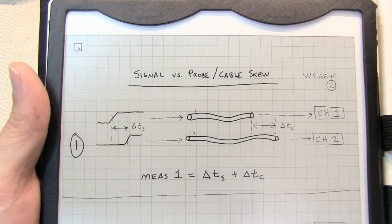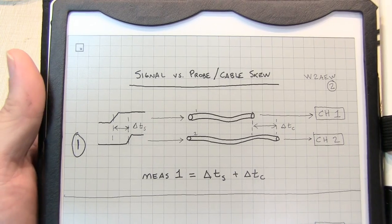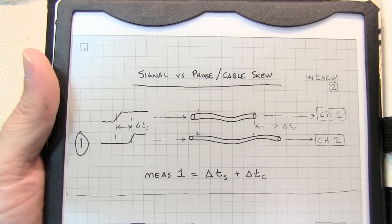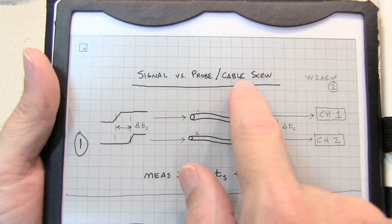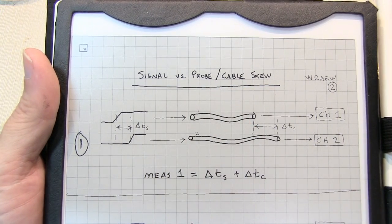How do we separate that out? And my friend and colleague Mike T reminded me of this neat little trick to separate out the probe and cable skew from our actual signal skew.